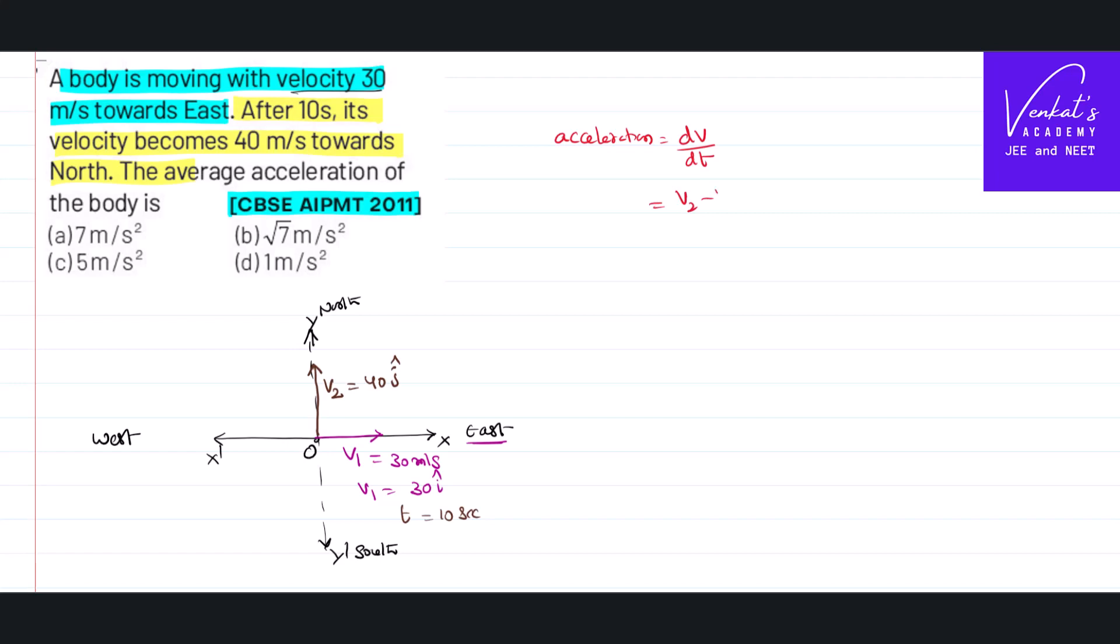That is v2 minus v1 by t2 minus t1. v2 is 40j minus v1 is 30i, t2 minus t1 is 10 seconds. That's the value of acceleration.